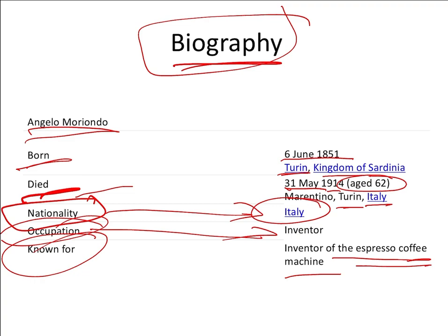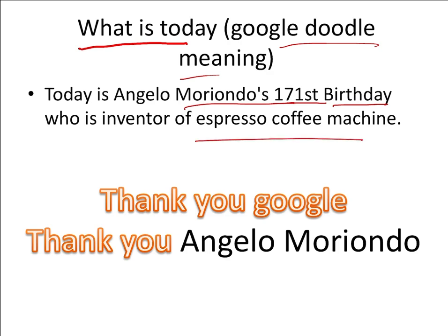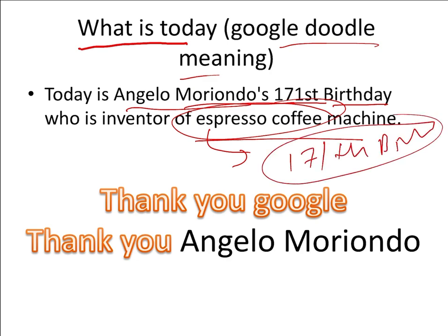So why is Google Doodle showing the doodle on its search engine today? Today is the 171st birthday of Angelo Morendo. He invented the espresso machine that is commonly used in our daily life today. That is why Google is showing the doodle on his 171st birthday as a tribute to him.